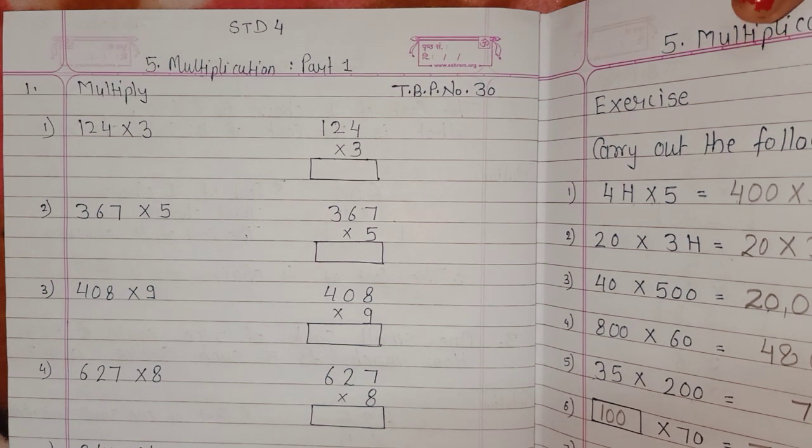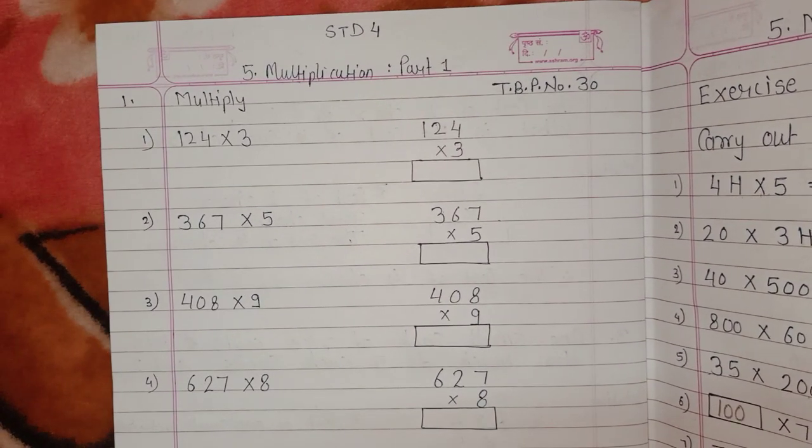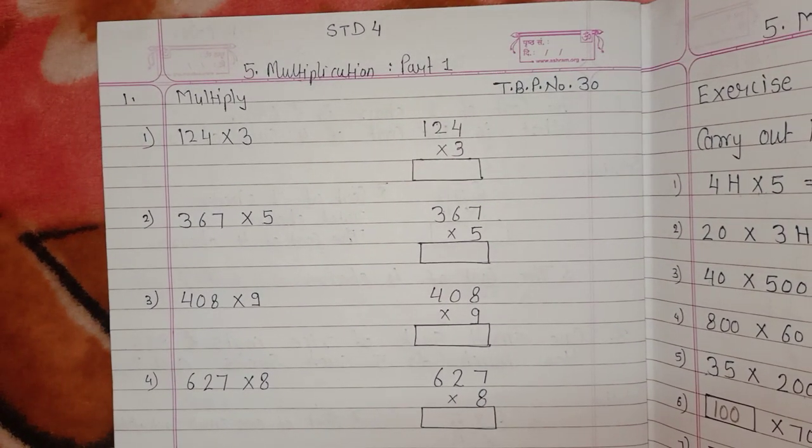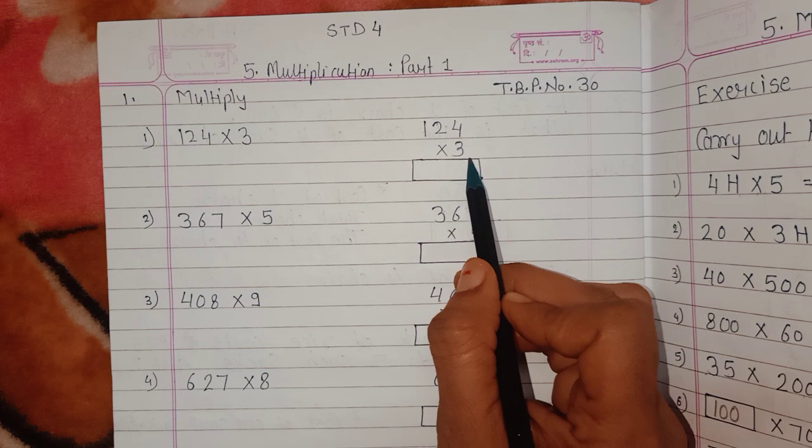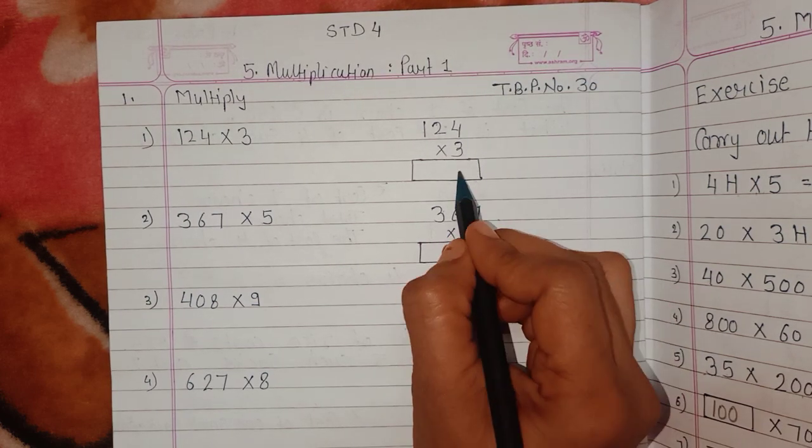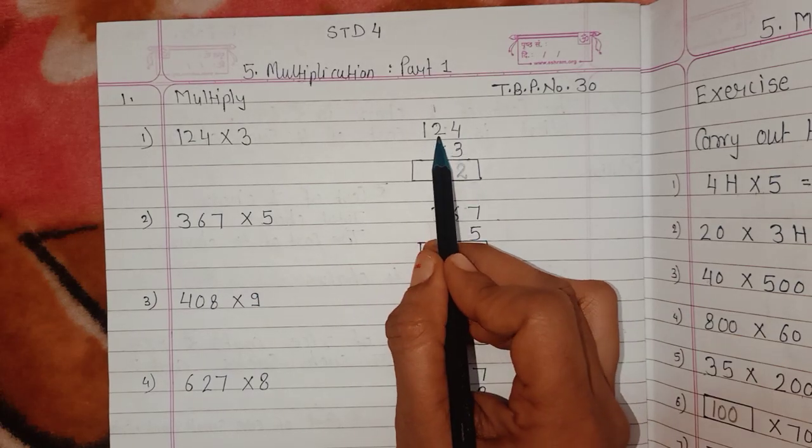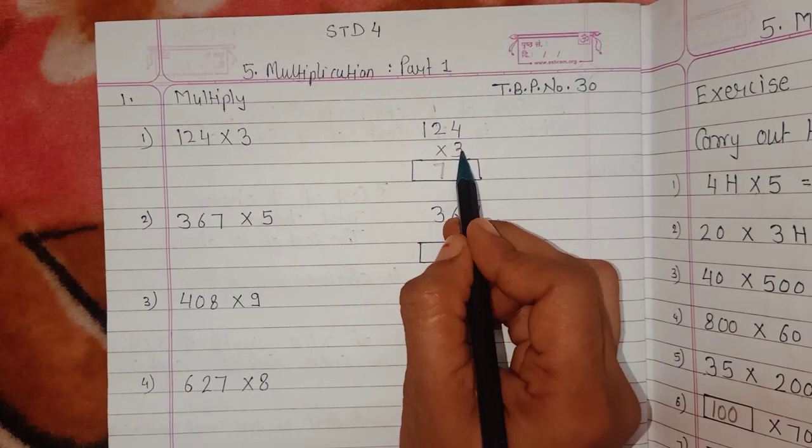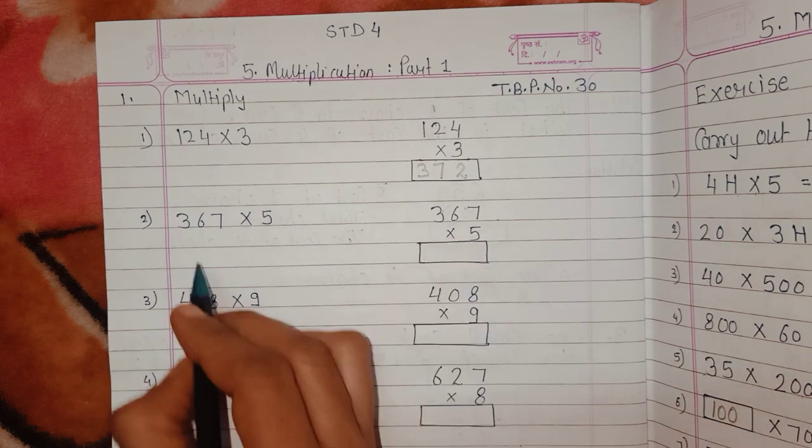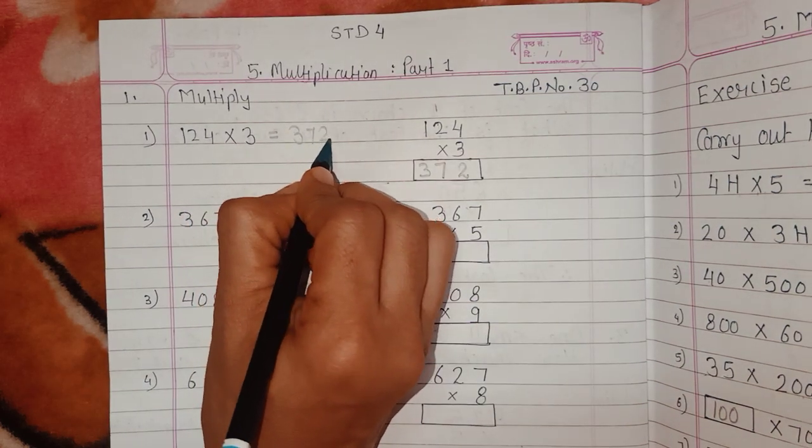The question is multiply, and the first question is 124 multiplied by 3. Let's start the solution. 3 times 4 is 12, so 2 here, carry 1. 3 times 2 is 6, plus 1 is 7. And 3 times 1 is 3. So the answer for this question is 372.